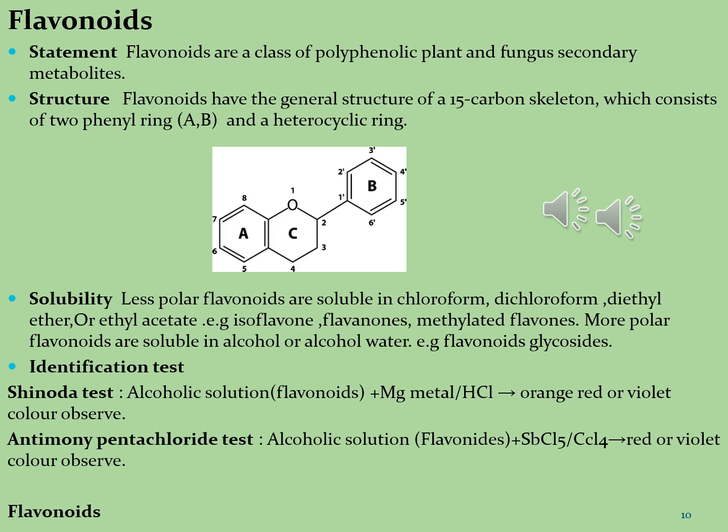Flavonoids rich with alcoholic and hydroalcoholic water solutions include flavonoid glycosides. Flavonoids are identified by using the Shinoda test and antimony pentachloride test. In the Shinoda test, an alcoholic solution of flavonoid is taken with magnesium metal and hydrochloric acid — it gives orange, red, or violet color indicating flavonoid presence. In the antimony pentachloride test, an alcoholic solution of flavonoids is added to antimony pentachloride and carbon tetrachloride solutions — it gives red or violet color indicating the presence of flavonoid molecules.